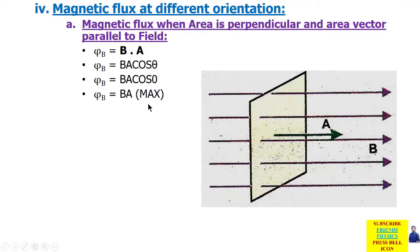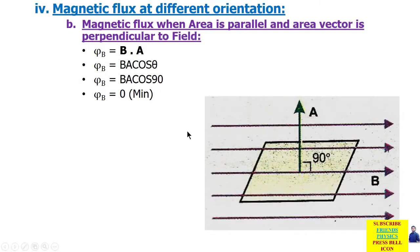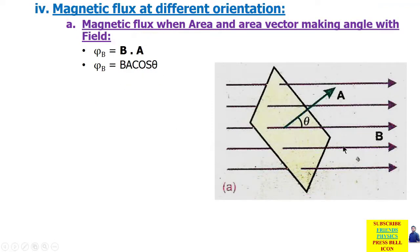Next case: अगर हम area को इस तरह place करें कि area parallel to field हो जाए — यह yellow box बिल्कुल flat horizontally पड़ा हो और magnetic field उसके ऊपर से परवाज़ करके गुज़र रही हो। तो magnetic flux when area is parallel and area vector is perpendicular — area vector, magnetic field के साथ perpendicular है। θ = 90°, cos90° = 0, तो magnetic flux would be 0. यह minimum flux होगा। अगर area किसी certain angle पर oriented है तो area vector, field के साथ angle θ बनाएगा — simple θ की value put कर देनी है।